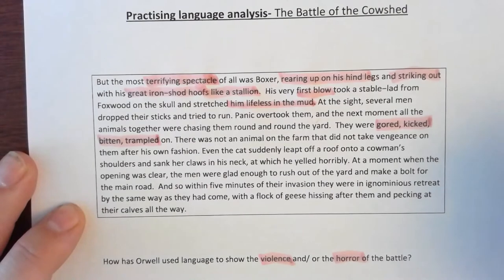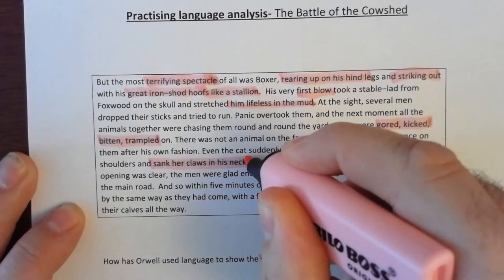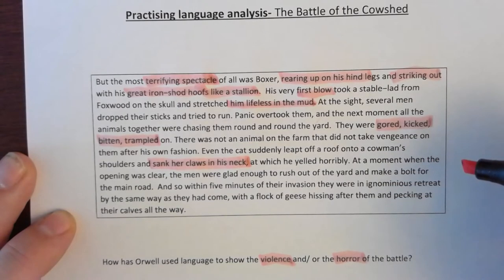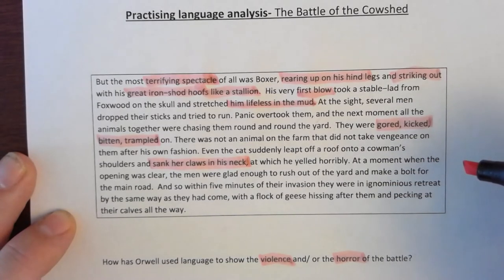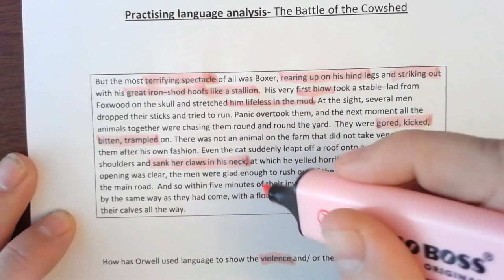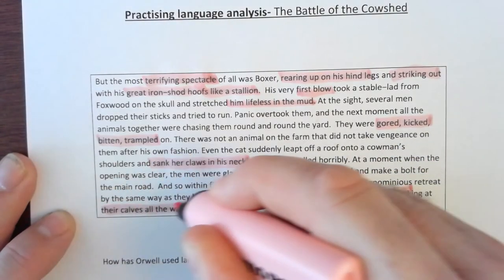'There was not an animal on the farm that did not take vengeance on them after his own fashion. Even the cat suddenly leapt off a roof onto the cowman's shoulders and sank her claws into his neck, at which he yelled horribly.' At a moment when the opening was clear, the men rushed out of the yard to make a bolt for the main road, and within five minutes of their invasion they were in ignominious retreat, with a flock of geese hissing after them and pecking at their calves all the way.